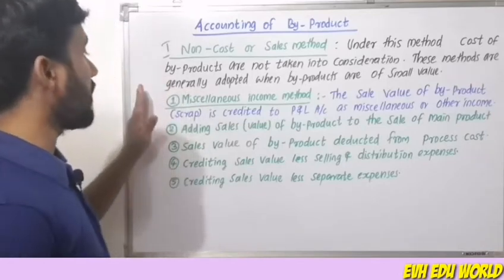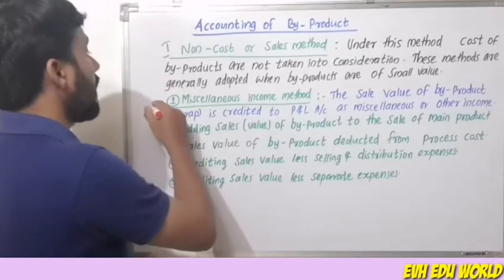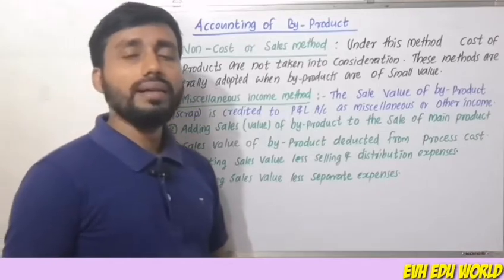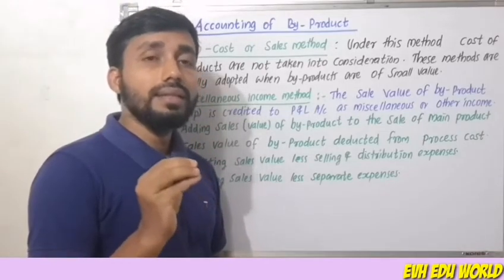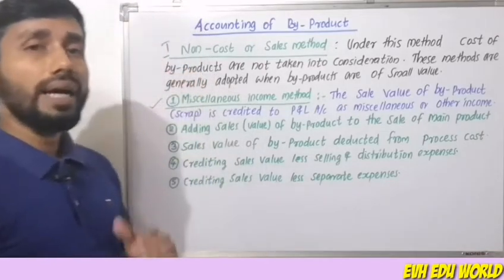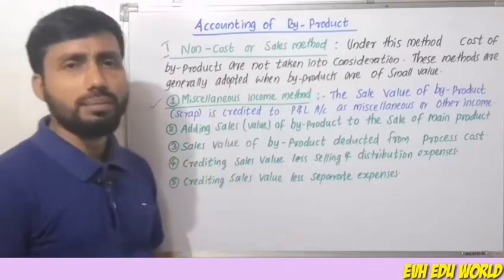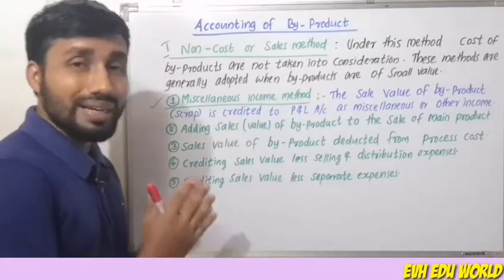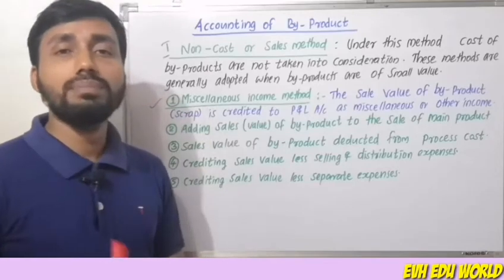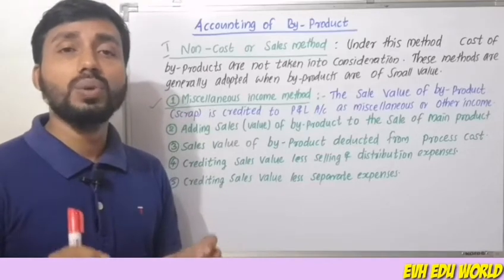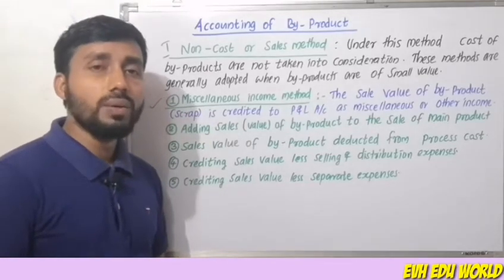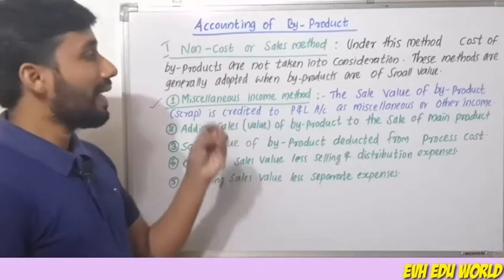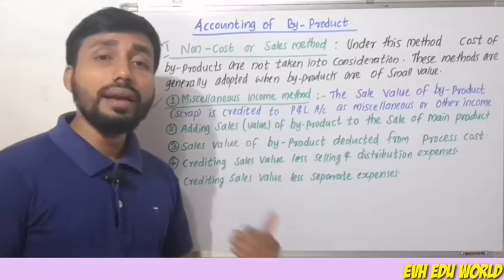These methods are called the miscellaneous income method. Under this method, the sales value of byproducts — what we normally call scrap — is credited to profit as miscellaneous income or other income.